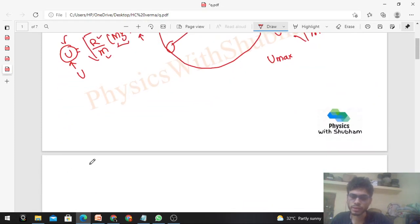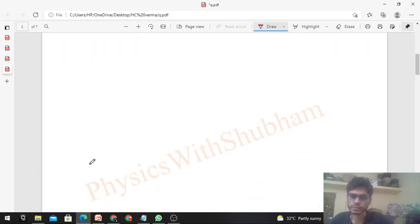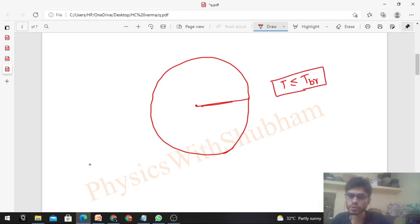Tension at every point on this vertical circle should be less than or equal to t max or breaking tension. First, you have to find tension at some general point. Let's say at some angle theta from the horizontal. At angle theta, let me draw the free body diagram. Downward there is mg, and directly towards the center there will be tension.